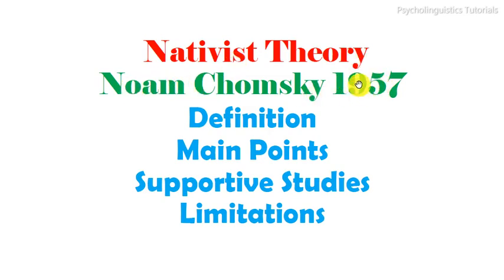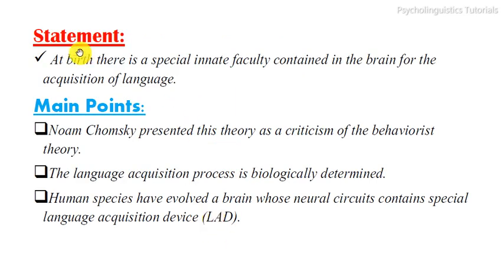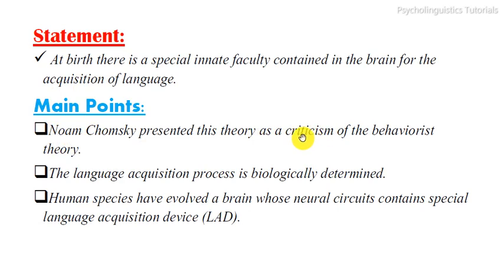This theory was proposed by Noam Chomsky in 1957. First we will discuss its definition, then its main points, then its supportive studies, and at the end some limitations of the theory. The main statement of the theory is that at birth there is a special innate faculty contained in the brain for the acquisition of language.